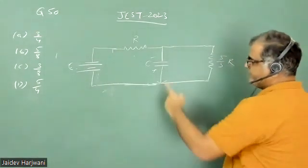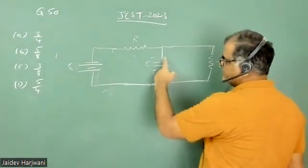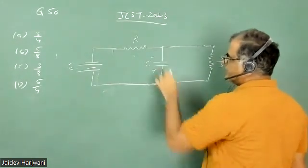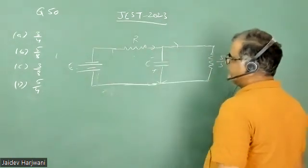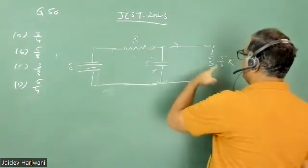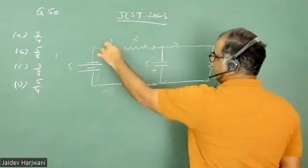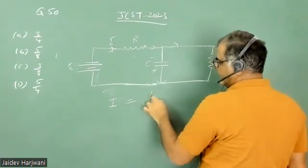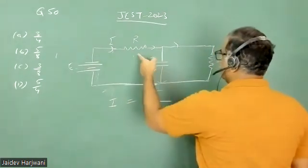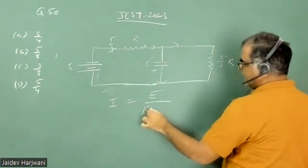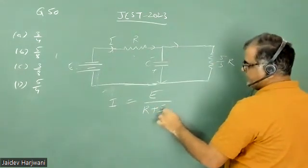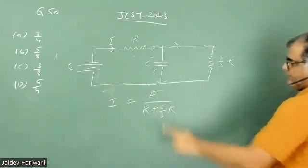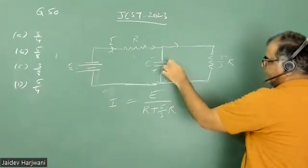Now the capacitor is fully charged. Once it is fully charged, there will be no current flowing through it, so current flows directly from here to here. I can now find the current in the circuit. Current will be voltage divided by total resistance. Total resistance is R plus 5R/3, and I can find the voltage across this capacitor.